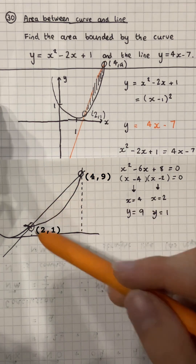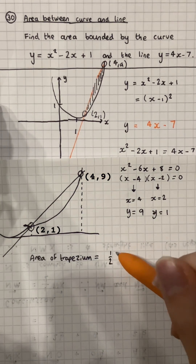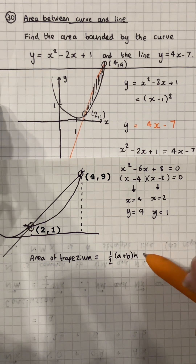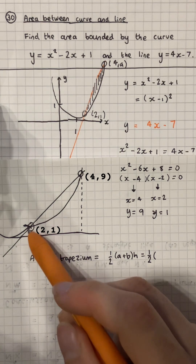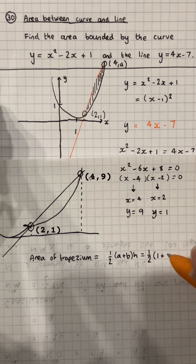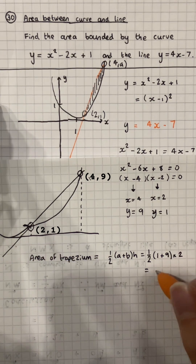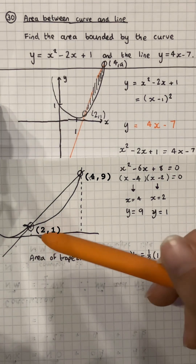If we zoom in on the diagram, you'll see there's a trapezium. We use the trapezium formula and think about a and b, which are the two parallel sides — one has a height of 1 and one has a height of 9. The base h is going to be 2, the distance between x equals 2 and x equals 4, giving us an area of 10.